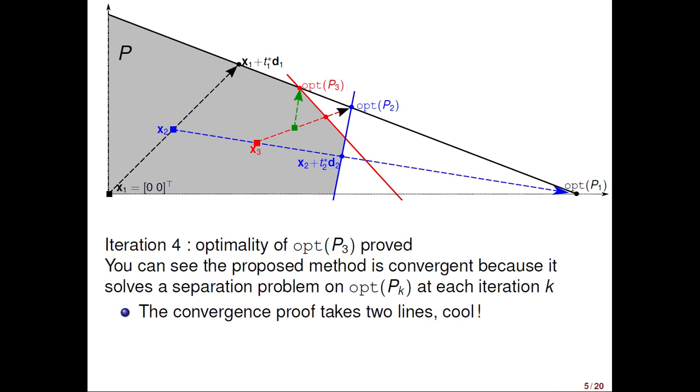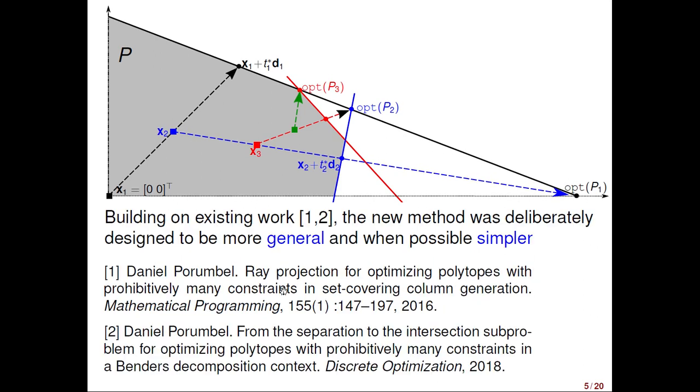You may notice that this method is convergent because it solves a separation subproblem on opt P_k at each iteration. This way, actually, the convergence proof takes two lines. This is cool. But this is not, this is no accident. This is not happenstance. Building on existing work, the method, the new method was deliberately designed to be more general and, when possible, simpler.